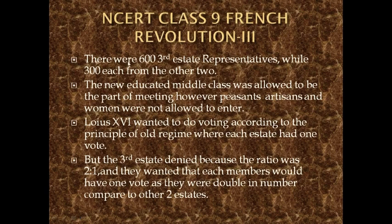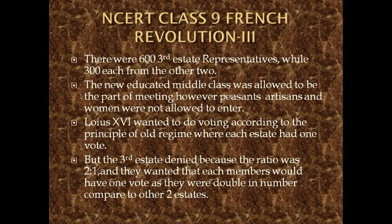At the meeting, there were 600 third state representatives, while 300 each came from the other two states. The commoners or middle class — the third state — made up almost 90% of the total population of France. The other two states were the nobility and the clergy. The new educated middle class, known as the bourgeoisie, was allowed to be part of the meeting. However, peasants, artisans, and women were not allowed to enter.